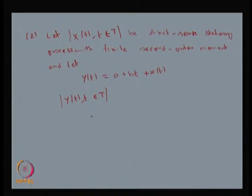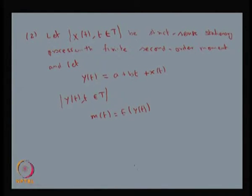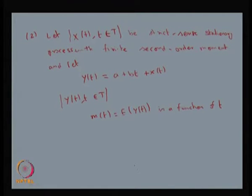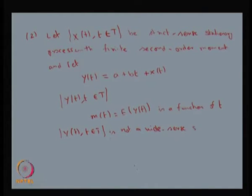Suppose you find out the mean for this random variable. If you find out the mean for Y(t), where a and b are constants, this is going to be a function of t. Since a and b are constants, the mean of Y(t) is a function of t. Since it is not satisfying the first condition to become a wide sense stationary process, Y(t) is not a wide sense stationary process.